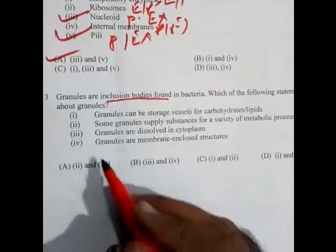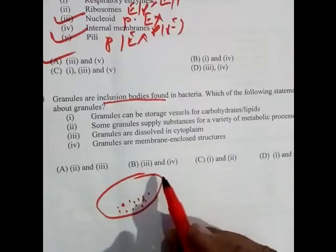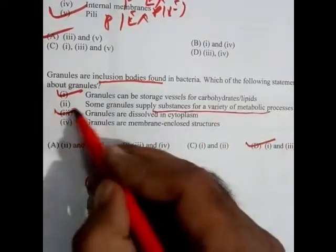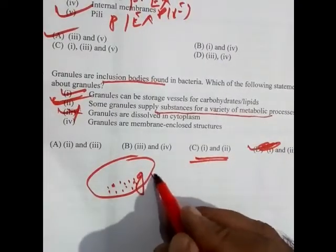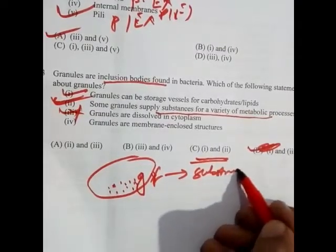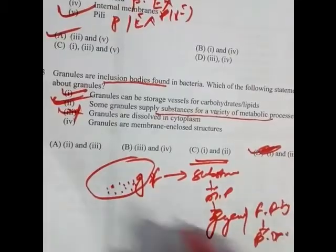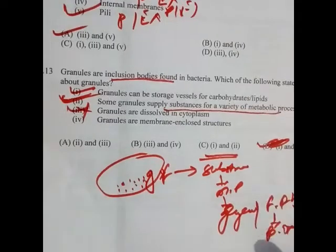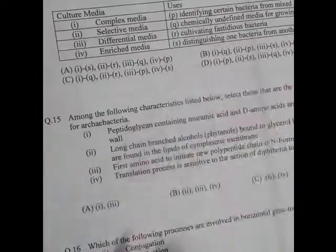Question 13: Which statements are true about granules? Granules are inclusion bodies — storage substances present in the bacterial cytoplasm that store material like fat, pigments, or carbohydrates. They provide supply substances to metabolic processes. Glycogen or fat stored in granules act as substrates for metabolic processes like glycolysis or beta-oxidation. The first and second statements are correct, so the answer is C.